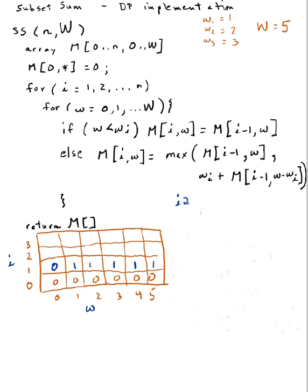Now i goes to 2, so I'll be filling in row 2. w starts at 0. Is 0 less than w sub 2, which is 2? Yes, so m[2][0] equals m[1][0], which is 0. Increment w. Is 1 less than 2? Yes, so m[2][1] equals m[1][1], which is 1.